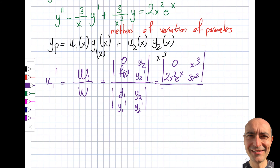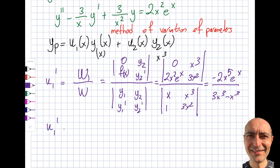Plugging in: y₁ = x (derivative 1), y₂ = x³ (derivative 3x²). The Wronskian W = (x)(3x²) - (1)(x³) = 3x³ - x³ = 2x³. The numerator W₁ = 0·3x² - 2x²eˣ·x³ = -2x⁵eˣ. So u₁' = -2x⁵eˣ / 2x³ = -x²eˣ.